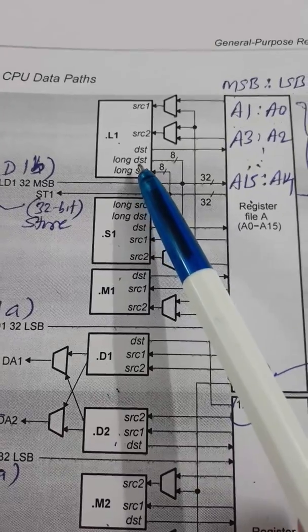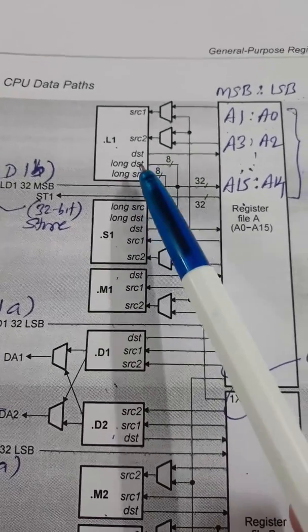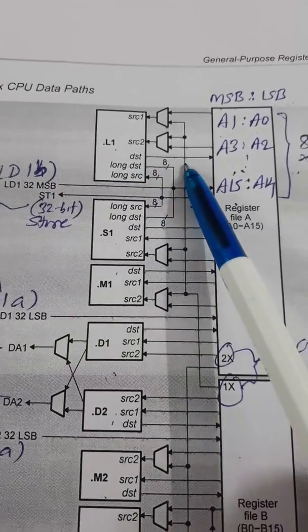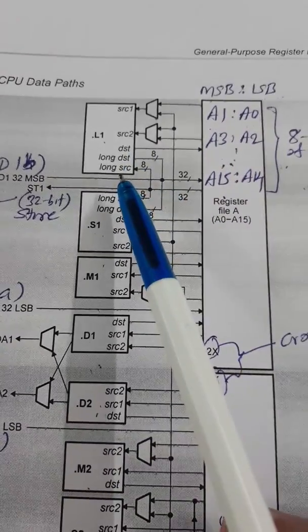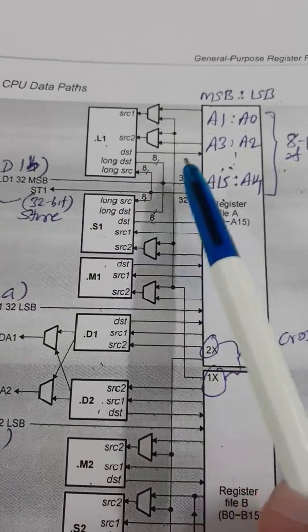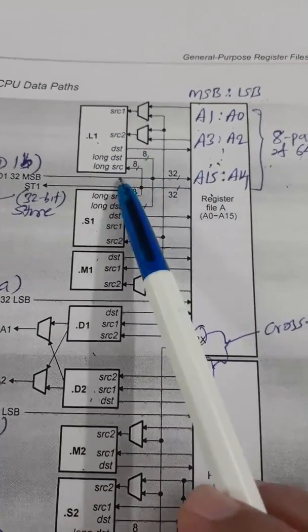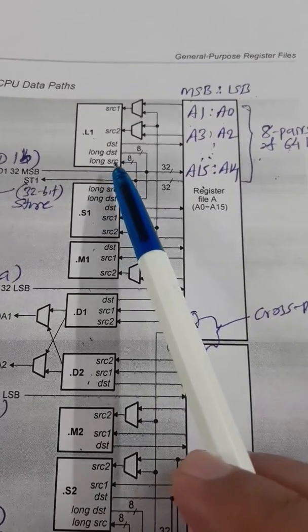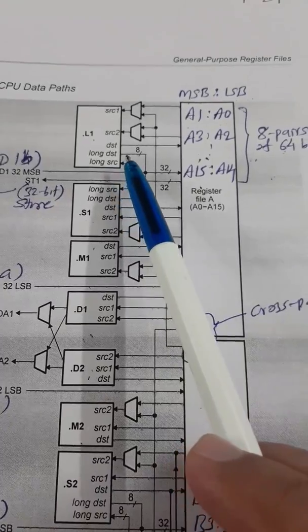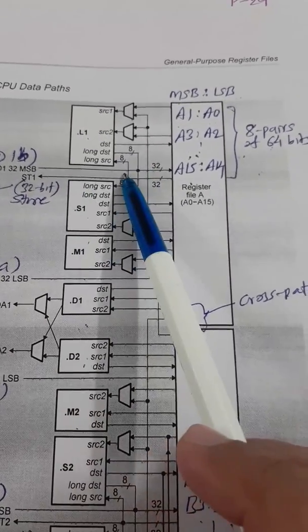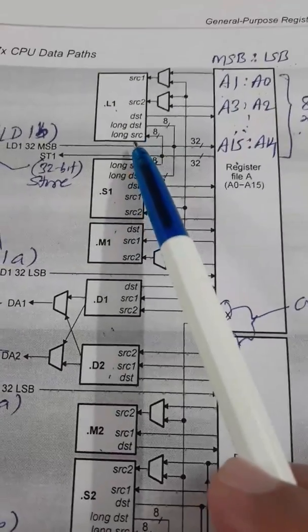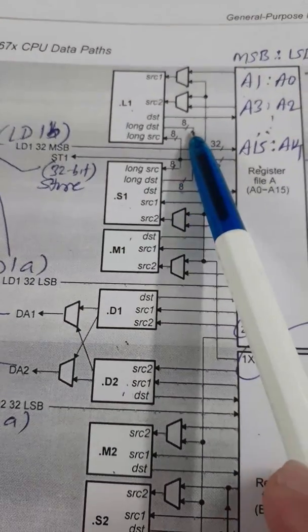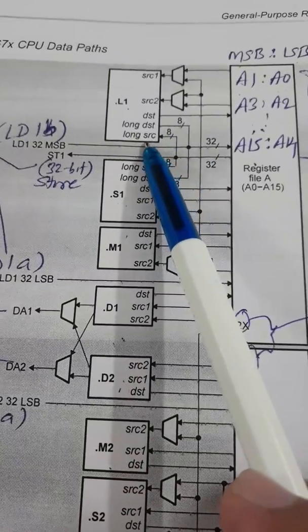Each line is usually a 32-bit line. So SRC1, SRC2, that is the source, that is the input for this unit and they are taken from this register file. And DST is the output for this unit, the output port for this D2 unit. Same way for all units. And there are some exceptions here. This L1 unit, you see, it has two additional ports that are long DST and long SRC. Now what is the meaning of long?